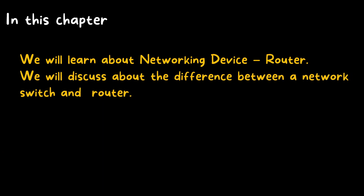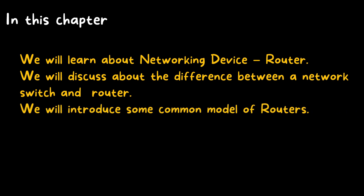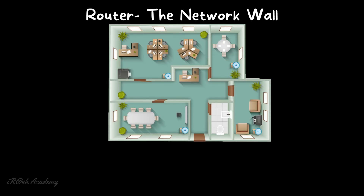We will discuss the difference between a network switch and a router, and introduce some common router models. Consider the office of Irash Academy: we have a user desk where all the users' PCs are available, a conference room for board meetings, a meeting room for small discussions, and a visitor room. This building has four different areas separated by walls.